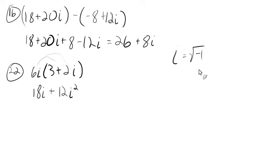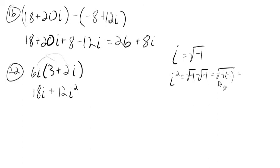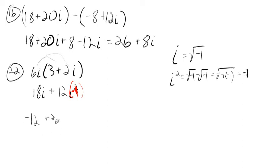So i is the square root of negative 1. i squared equals i times i, which is the square root of negative 1 times the square root of negative 1. That's the square root of negative 1 times negative 1. Negative 1 is being multiplied by itself, so negative 1 is the square root of this number — meaning i squared equals negative 1. So we replace i squared with negative 1: that's 12 times negative 1, which is negative 12. So the answer is negative 12 plus 18i. It's important to know that i squared equals negative 1; it's going to come in handy in this section.